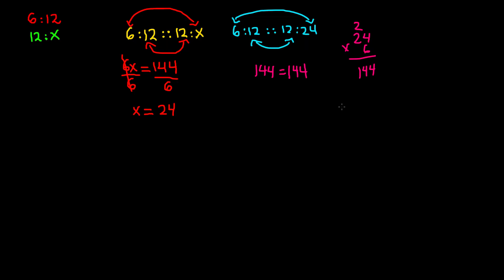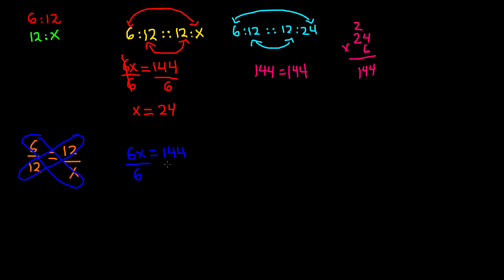The next way to find x is through fractions. We set up six over twelve equals twelve over x. Using cross-multiplication, six times x equals twelve times twelve, so 6x equals 144. Divide both sides by six — the six cancels out — and x equals 144 divided by 6, which is 24. Alternatively, we can ask what times six gives us twelve: six times two gives twelve, so multiplying twelve by two for the denominator gives twenty-four. Either way, x equals 24.